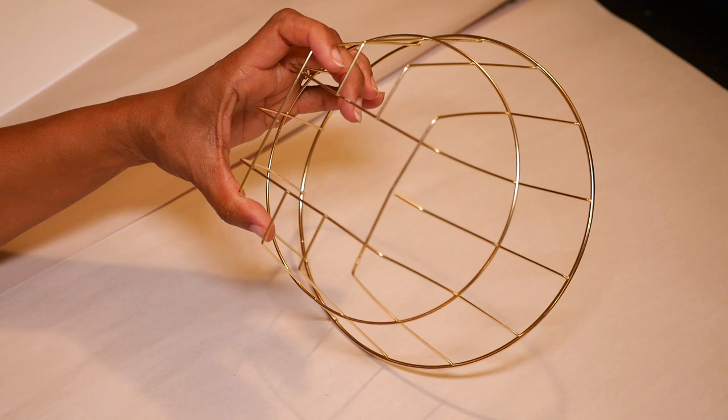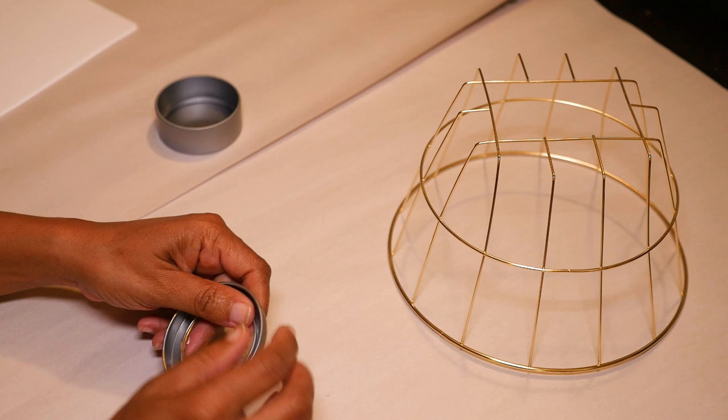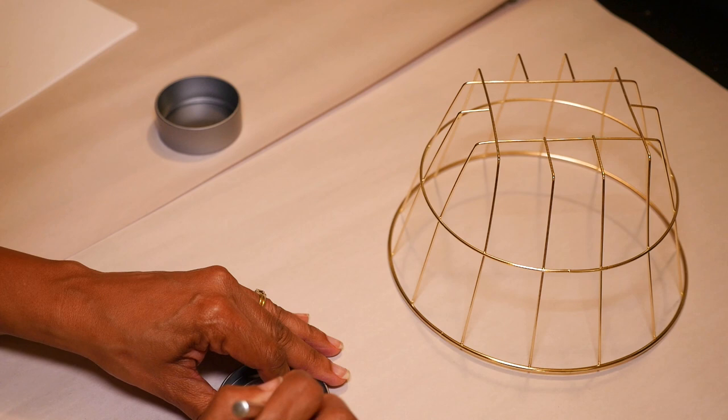Okay, so now I have an opening at the bottom and I want my light fixture to fit through here. This shade is going to go on a floor lamp that I have in the basement, and to attach it to the fixture I'm using the top of this magnetic tin container.